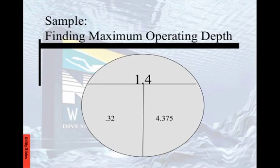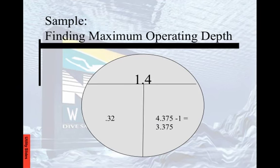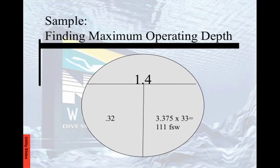Now that 4.375 is not in feet — that's atmospheric pressure, as you'll recall from when we converted atmospheres working with Boyle's Law questions. So we take 4.375 minus 1, which gives us 3.375. Then we do the multiplication: 3.375 times 33.